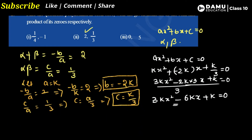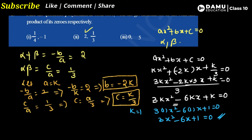Let us substitute k equals 1. That gives us 3 times x squared minus 6 times 1 times x plus 1 equals 0. So we get 3x squared minus 6x plus 1 equals 0. This is the way to find the polynomial with the given sum of zeros and product of zeros.